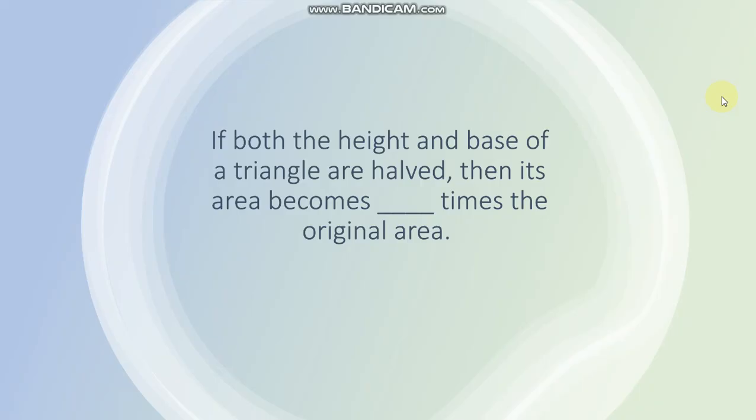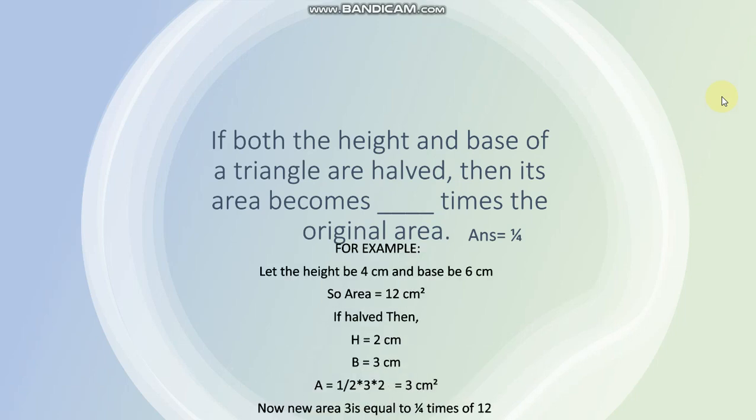Next question is if both the height and base of a triangle are halved, then its area becomes dash times the original area. Aap ko kya karna hai? Height or base ko half karna hai. Toh area joh aapka new area aega woh kitnay times ho jayega original area ke? Answer is 1 upon 4 times the original area. How you will calculate? For example, hum ne height lelhi 4 cm, let our base be 6 cm. Now area is half into base into height, toh 12 cm square is area.